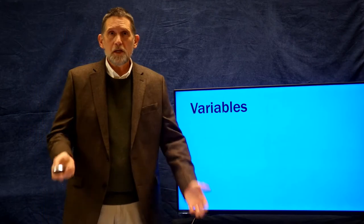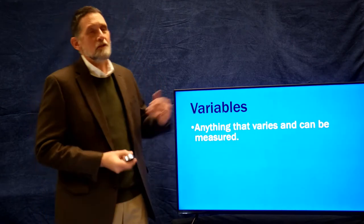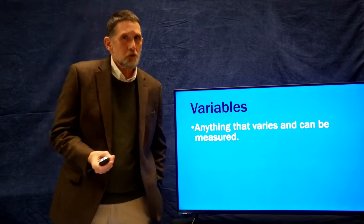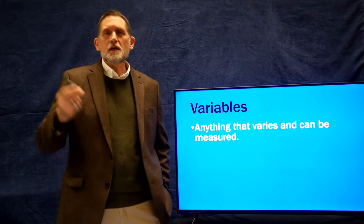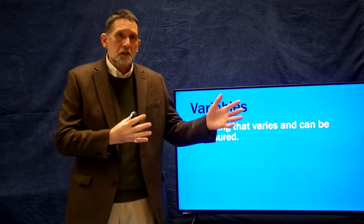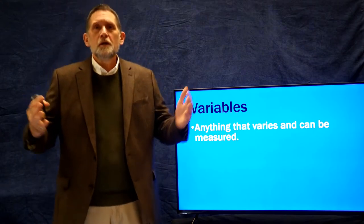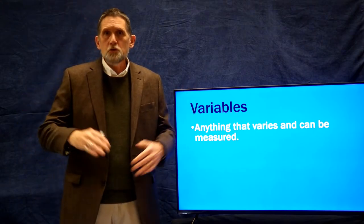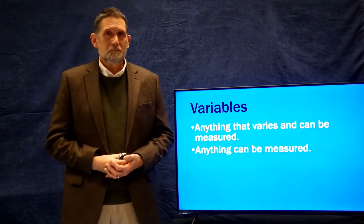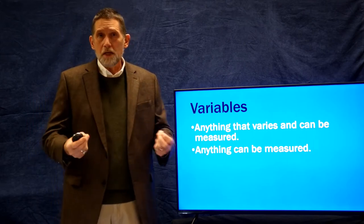Describing variation begins with an important concept: a variable. What is a variable? A variable is anything that varies, but more importantly, it has to be able to be measured. So a variable is a measurement of something that varies. For example, you can look at height — some people are very short, some are very tall — and you can measure that variation in centimeters.